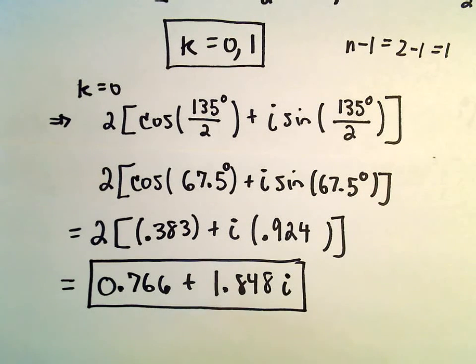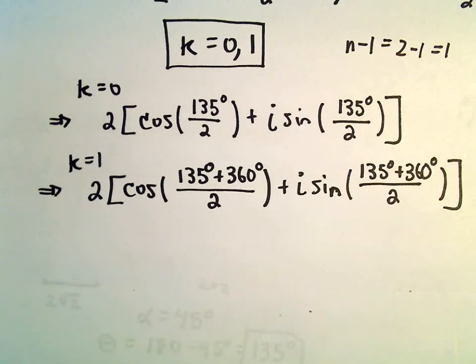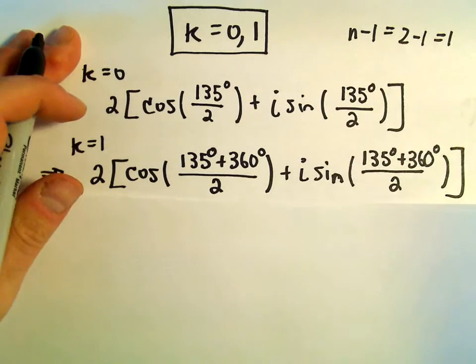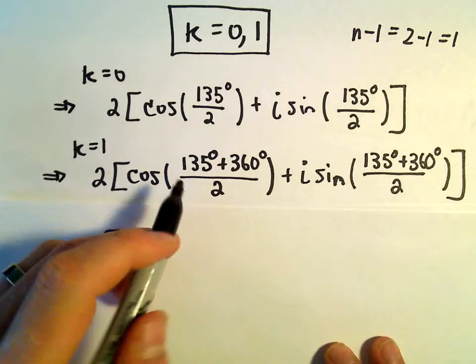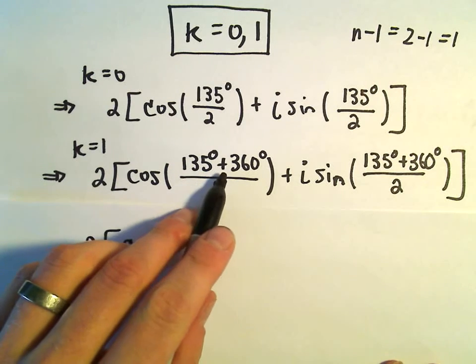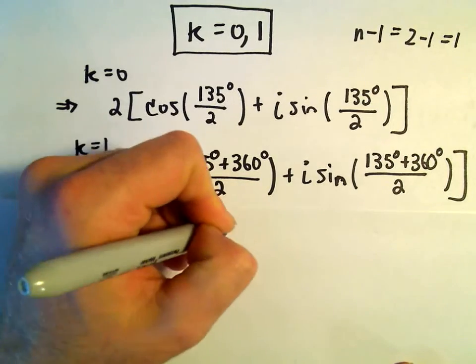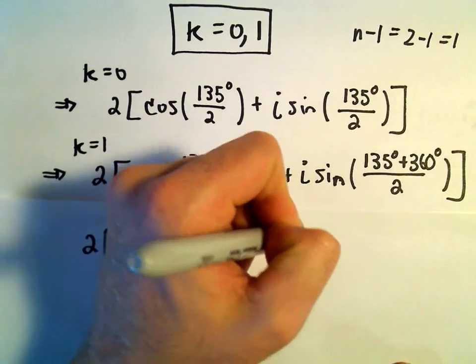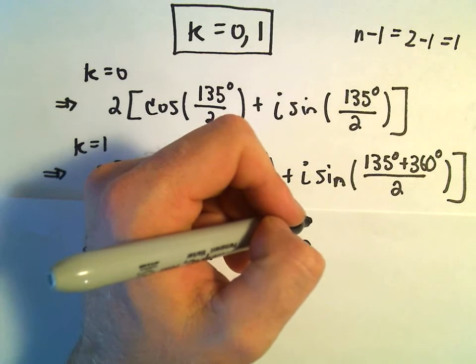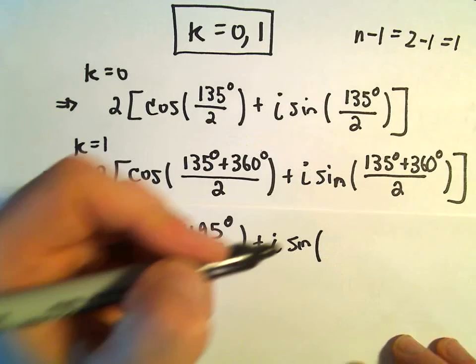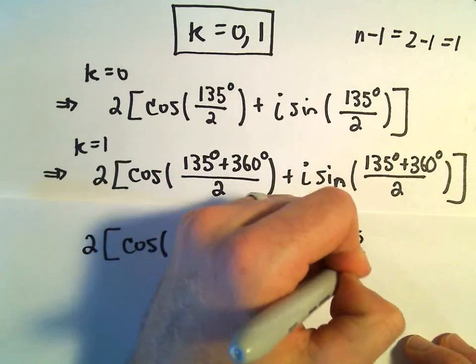Now we just need to go back and do the same thing for our k equals 1. So let's see, k equals 1, I believe this is what we had here. So we've got 2 times cosine of, let's see, 360 and 135. That's going to give us 495 all over 2. We'll get the same thing here for sine. We'll just get 495 over 2.